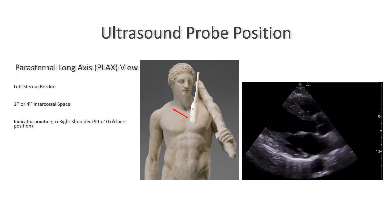In the parasternal long axis view, you should be able to see the ventricle nice and full. You should not see the apex and you should not foreshorten the ventricle. If you do, you may have to rotate, tilt or rock the probe to maximize the left ventricle cavity. Also note that by convention, the indicator of the probe correlates to the right side of the image. This can be changed in the settings of the machine, so make sure that you see the mark on the image — some manufacturers will put their logo and some others will just put a dot.